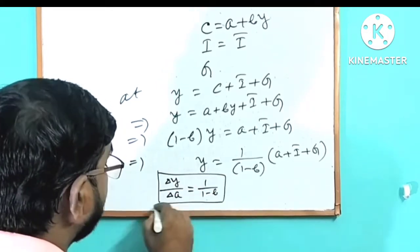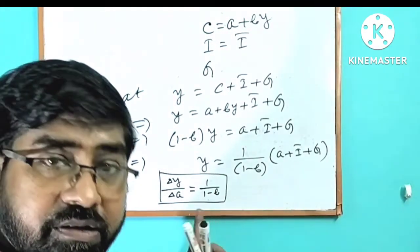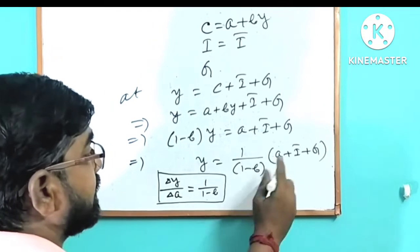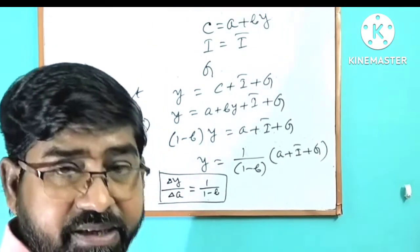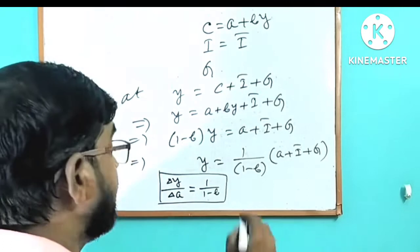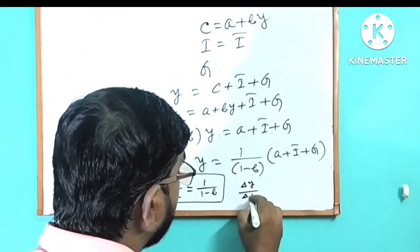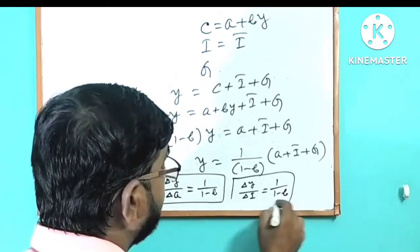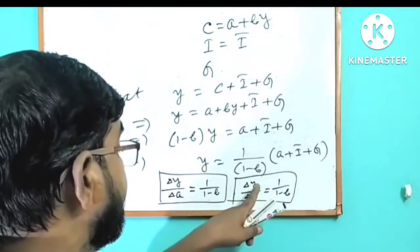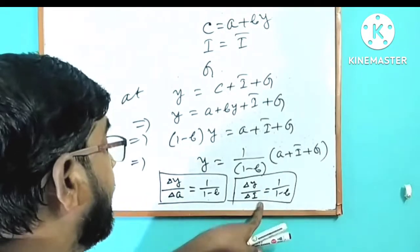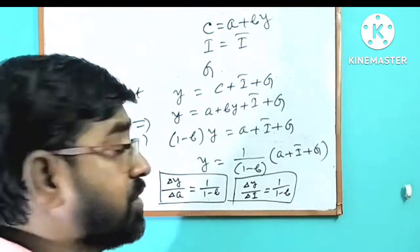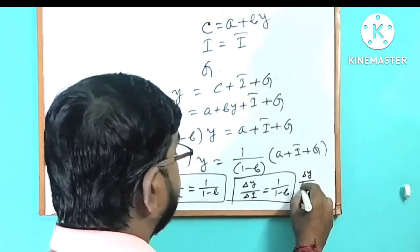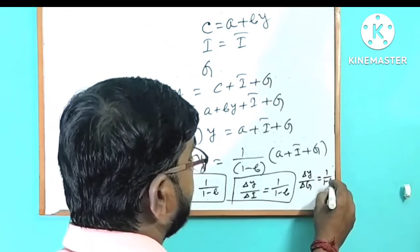This is autonomous consumption. Taking the derivative, delta y by delta a, we get the constant 1 by 1 minus b. We are going to get delta y by delta g equals to 1 by 1 minus b. The change in income due to change in investment — we are going to change the government expenditure.